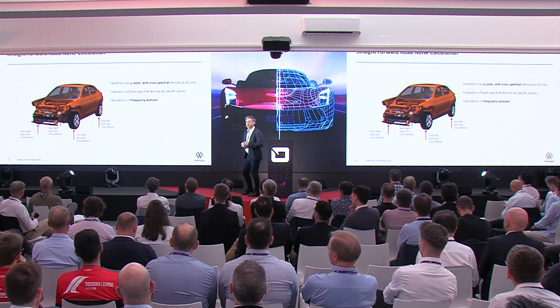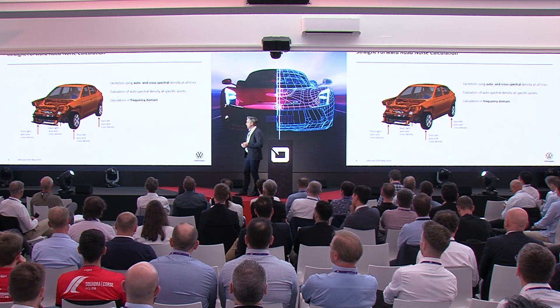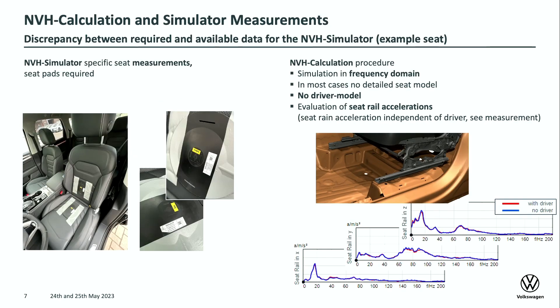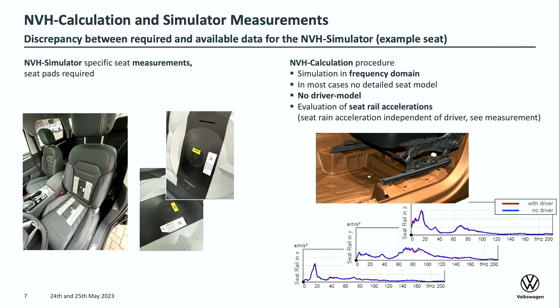Such a typical NVH calculation model includes your finite element trim body, the axle, the tyres, some auto spectra and cross spectra which are used to excite the several tyres. You then take a closer look at, for example, the steering wheel at the 9 o'clock point, or also the seat rails. And that's one of the main problems — because currently in our process we evaluate the trim body by looking at the seat rail vibrations in the X, Y, and Z directions. It's efficient and the scatter concerning these values is quite low.